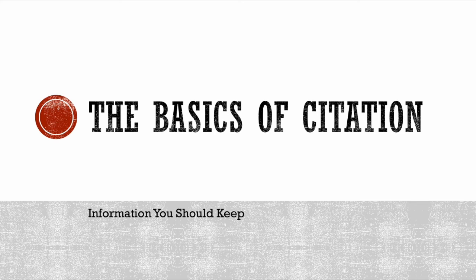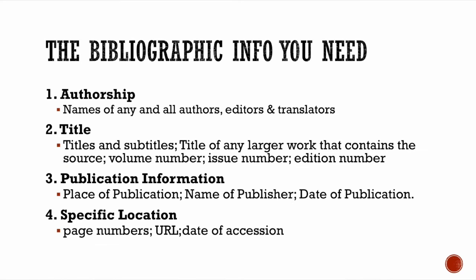The basics of citations are pretty straightforward, and this is true for almost any style of citation. You need the authorship — you need to know who wrote it or who produced the document or the book. You also need to know the title, the publication information, and specifically where it's found. Those are the basic facts. There are other considerations to be taken into account, but if you can remember those four things — authorship, title, publication information, and specific location — you've got your citation basics down.